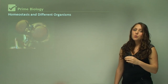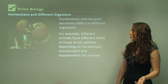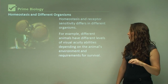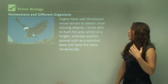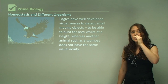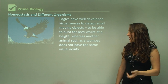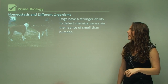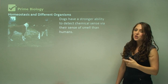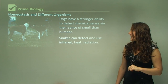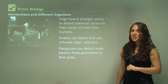Homeostasis and receptor sensitivity differ across organisms depending on their environment and survival requirements. Eagles have well-developed visual sensors to detect small moving objects from great heights for hunting prey. Dogs have a stronger ability to detect chemical scents via smell than humans. Snakes can detect infrared heat and radiation, while platypuses can detect weak electric fields generated by their prey.